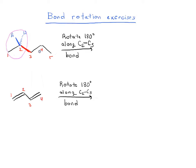We're told to rotate carbon 1 by 180 degrees. Imagine this is part of your steering wheel and you're going to rotate it — let's say in this direction. As soon as you rotate it, it's going to go from being in the plane of the page to being a wedge, and it continues as a wedge until it gets back to being in the plane of the page again.